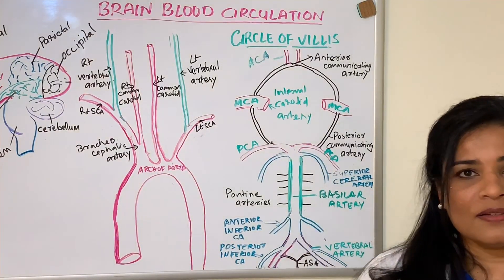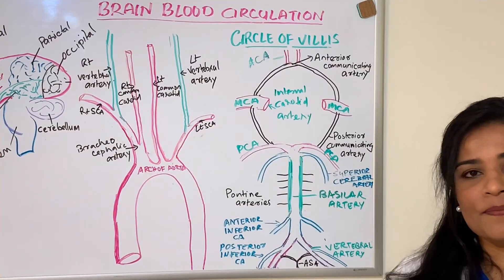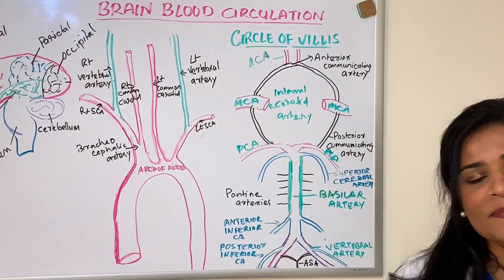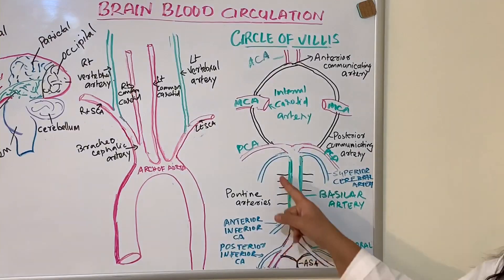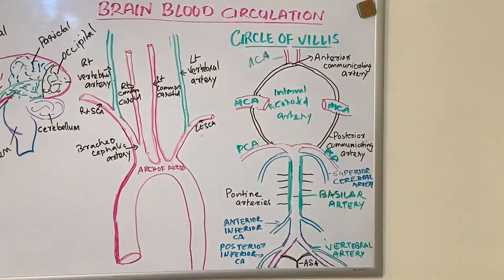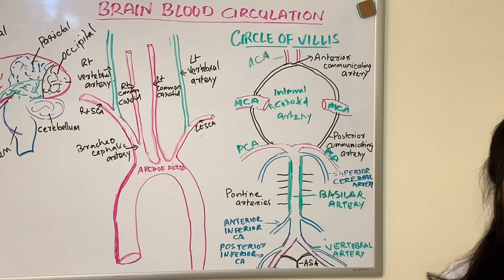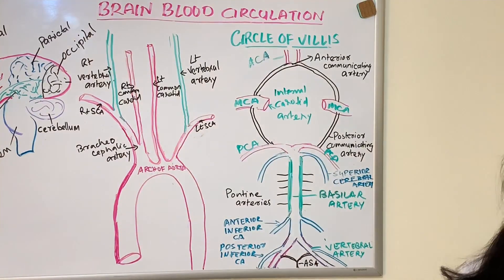The basilar artery mainly supplies blood to the cerebellum. Three main arteries supply the cerebellum: two arise from the basilar artery and one from the vertebral artery. These are the superior cerebellar artery, the anterior inferior cerebellar artery, and the posterior inferior cerebellar artery. Together, these three arteries deliver blood to the cerebellum.